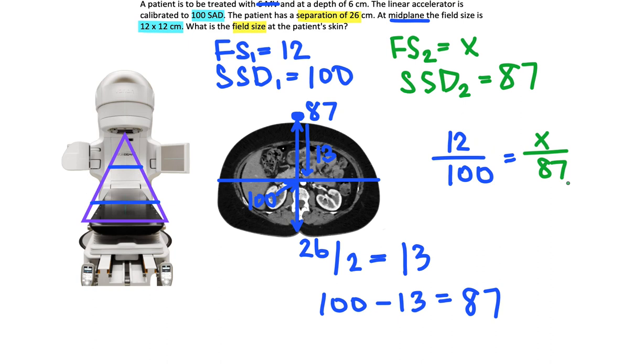We did field size on top, SSD on the bottom. We did the ones we know on the left versus the ones we're looking for on the right. So we keep everything together in their own ways.